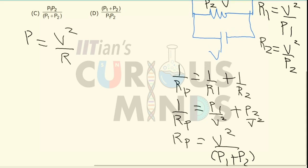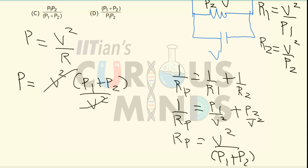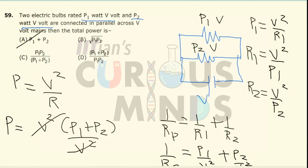Substituting back, the total power equals V² × (1/Rp) = V² × (p1 + p2) / V². The V² cancels out, so the total power equals p1 + p2, which is option A.